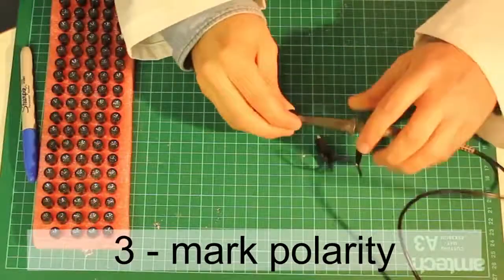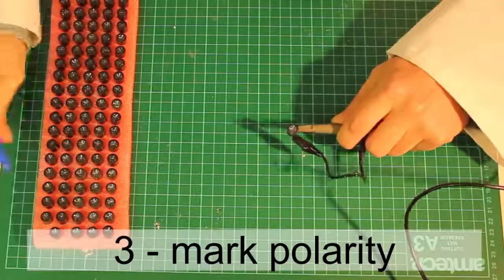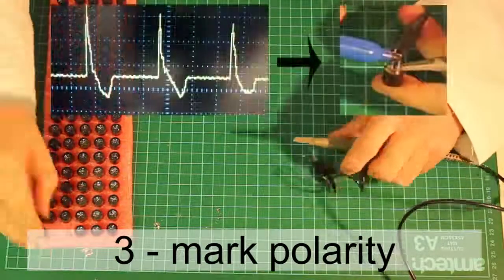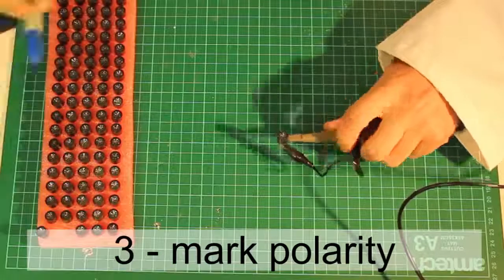Now we need to mark the polarity of the transducers. To do so, attach one to the scope and poke it with a thin wire. If the spike goes up, mark the positive leg. If the spike goes down, mark the negative leg.